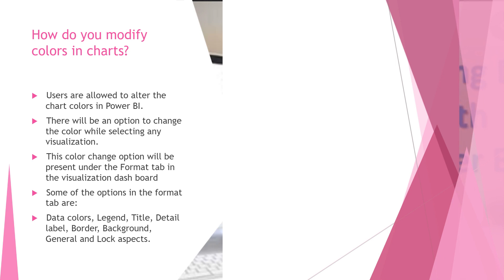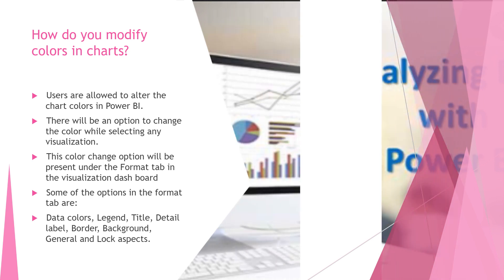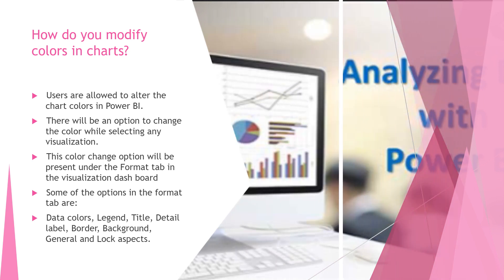How do you modify colors in charts? Users are allowed to alter chart colors in PowerBI. There will be an option to change the color while selecting any visualization. This color change option is present under the Format tab in the visualization dashboard. Some of the options in the Format tab are data colors, legend and title, detail label, border, background, general, and lock aspect.